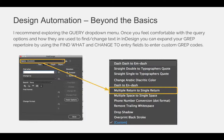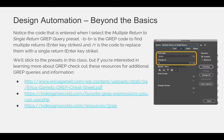In this example, I am going to try to get rid of multiple enter keys or return hits and modify them to just have a single return. Notice the code that is entered when I selected the multiple-return-to-single-return GREP query preset — it has a tilde B, tilde B, plus (~B~B+). This is the GREP code to find multiple returns or enter key strikes. The forward slash R (\r) is the code to replace them with a single return or enter key strike.